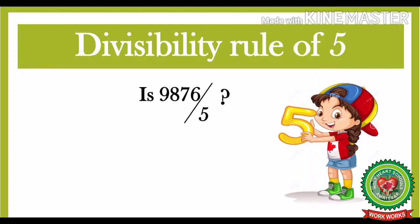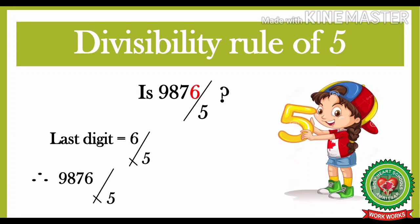Let us take one more example. Is 9876 divisible by 5? Let us look at which is the last digit of this number. 6 is the last digit. The rule says if the last digit is only 5 or 0, then the whole number is divisible by 5. But here the last digit is neither 0 nor 5, which means it is not divisible by 5. Therefore, 9876 is not divisible by 5.